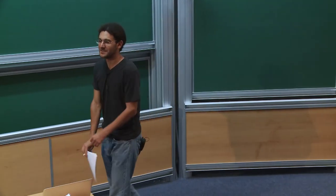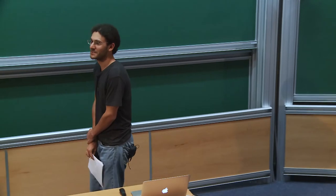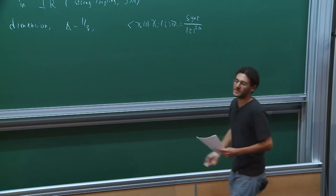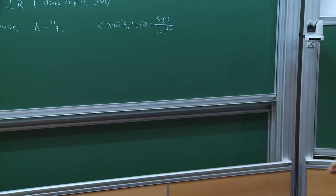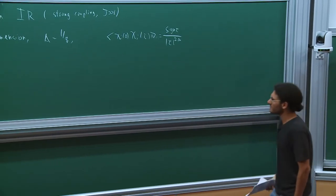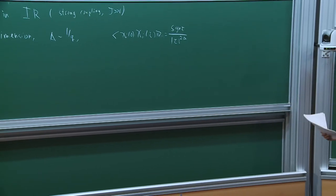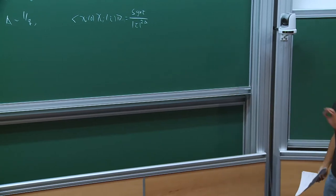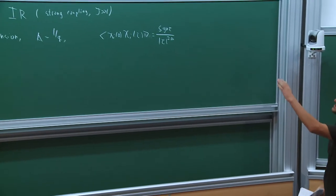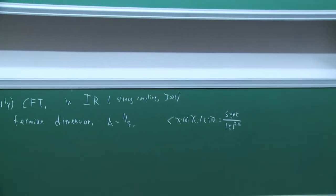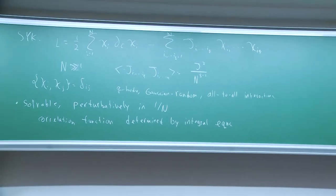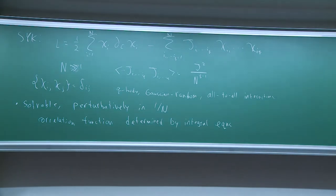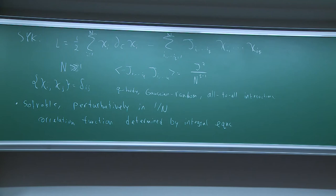All quantities are after disorder averaging. If you don't like disorder, the simplest workaround is to think of J as just a free field with a two-point function equal to a number, and proceed doing field theory as you would normally, drawing a free propagator for J and not including any quantum corrections to J.